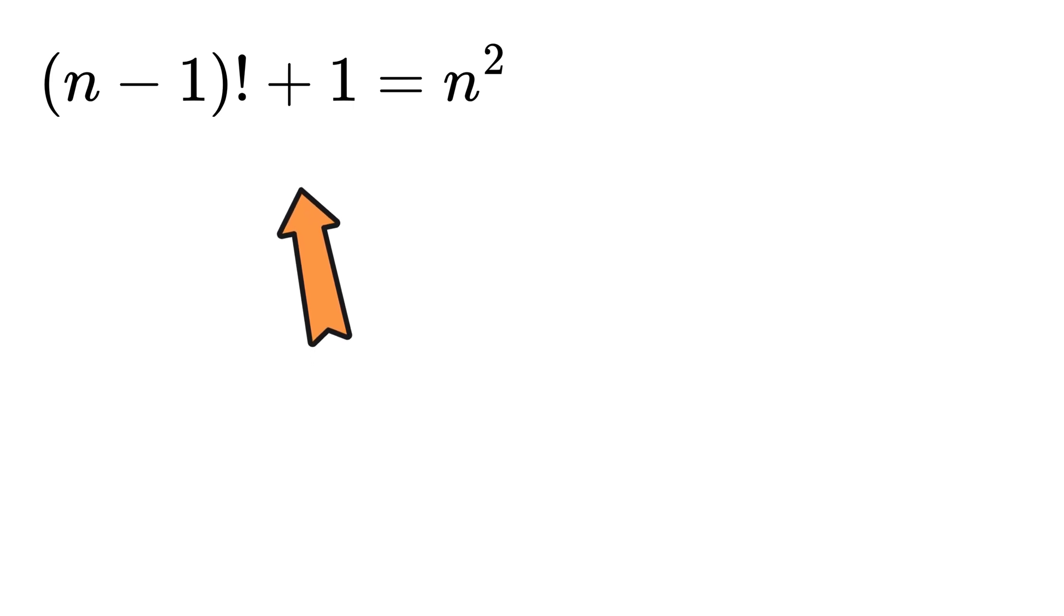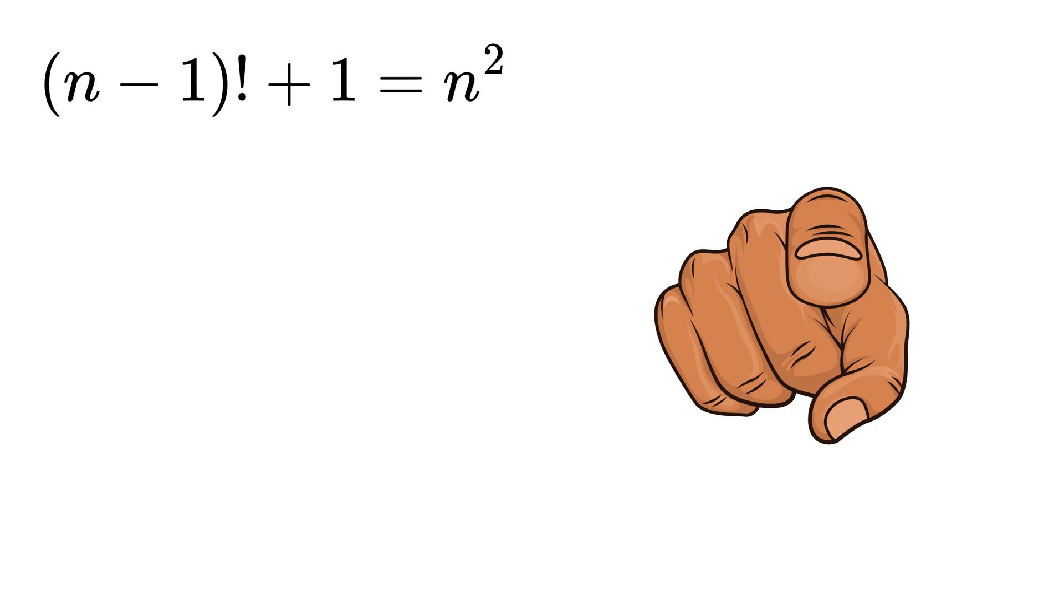Today we have this nice question, which is a mixture of both factorial and quadratic equations. n minus 1 factorial plus 1 equals n square. Can you solve it?